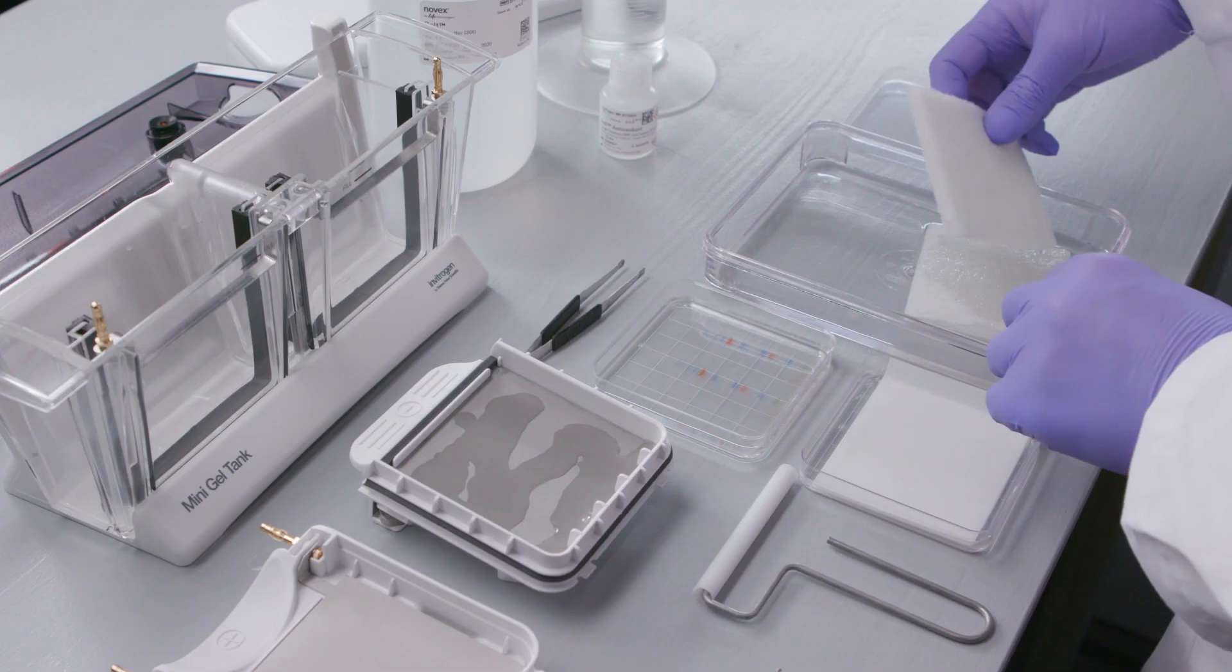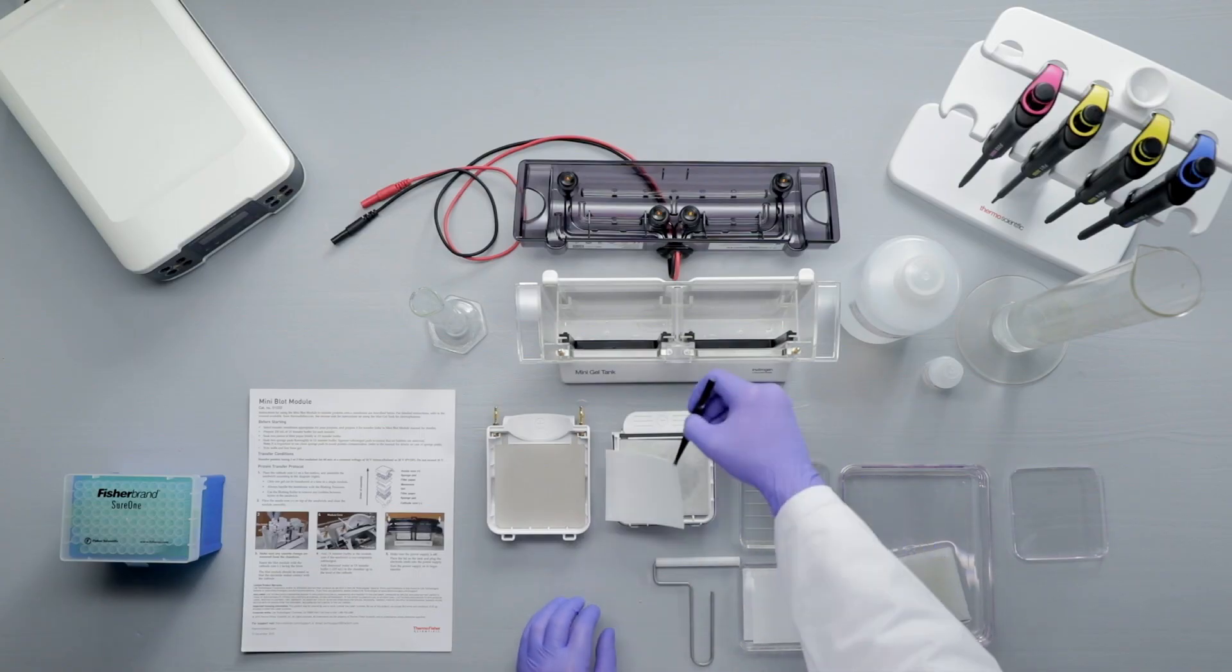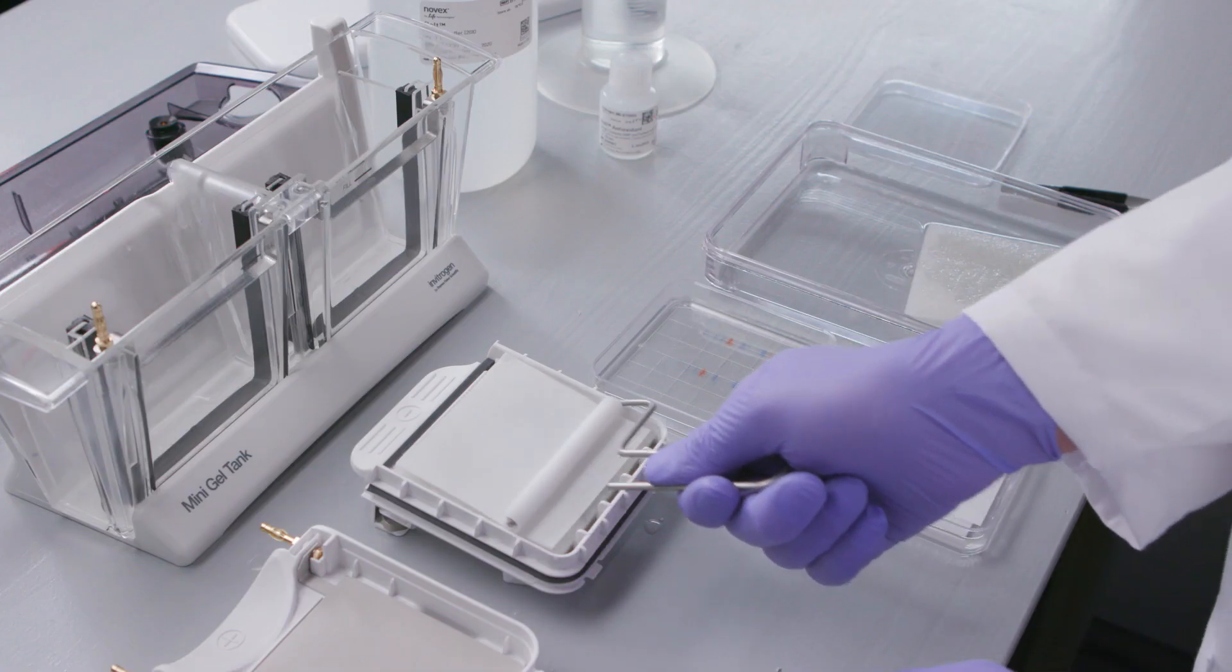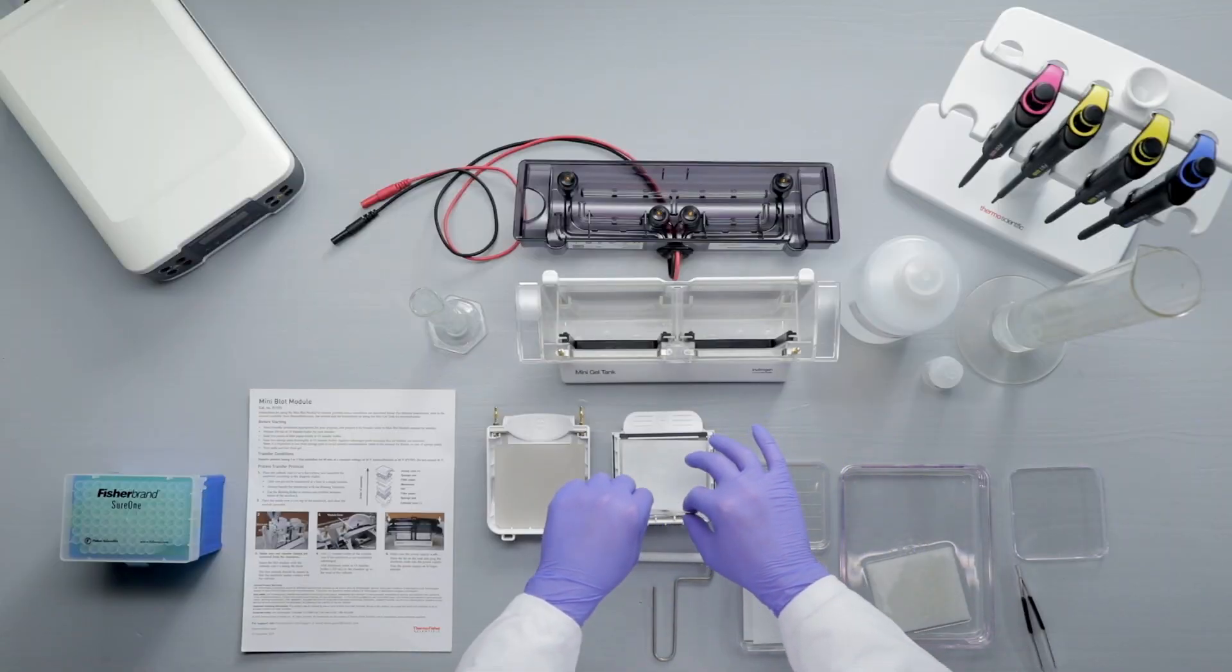Then place a pre-soaked sponge pad on the cathode core, followed by a pre-wetted filter paper. Next, use the blot roller to squeeze out air bubbles from between each layer. Place the gel on the stack, again using the roller to remove air bubbles.